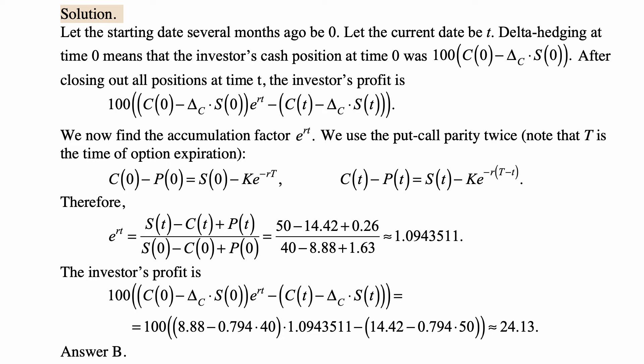We use the put-call parity twice. Note that T is the time of option expiration in this calculation. We write that C(0) - P(0) = S(0) - K*e^(-rT), and C(t) - P(t) = S(t) - K*e^(-r(T-t)). This is put-call parity at time 0 and at time little t.